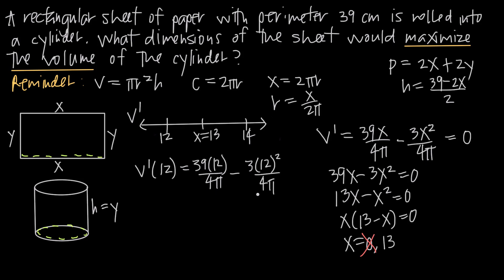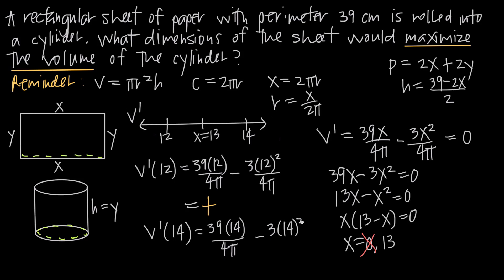What matters is not the exact value but whether the result is positive or negative. V'(12) gives a positive value. Then V'(14) = 39(14)/(4π) − 3(14²)/(4π), which gives a negative value. So the derivative is positive to the left of x = 13 and negative to the right.